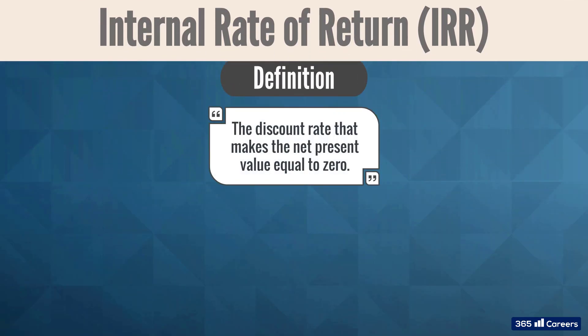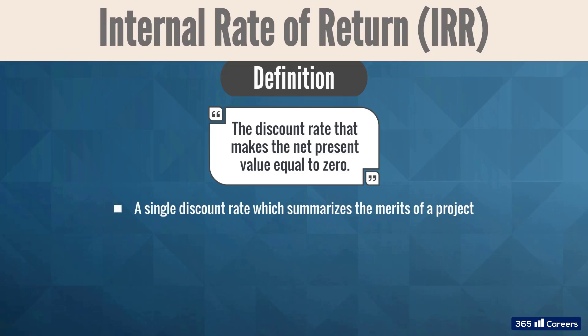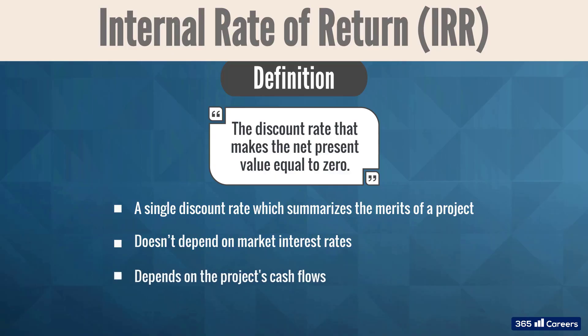IRR is defined as the discount rate that makes the net present value equal to zero. It is about as close as we can get to the NPV without actually calculating it. The basic rationale behind this method is that it delivers a single discount rate which summarizes the merits of a project. The number doesn't depend on the interest rates currently offered in the economy — that's why it's called the internal rate, in the sense that it only depends on the cash flows of the project.